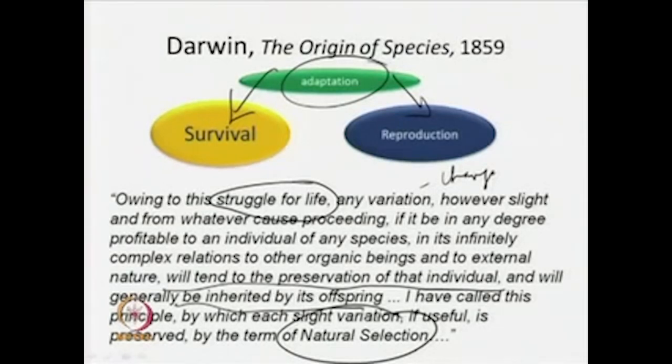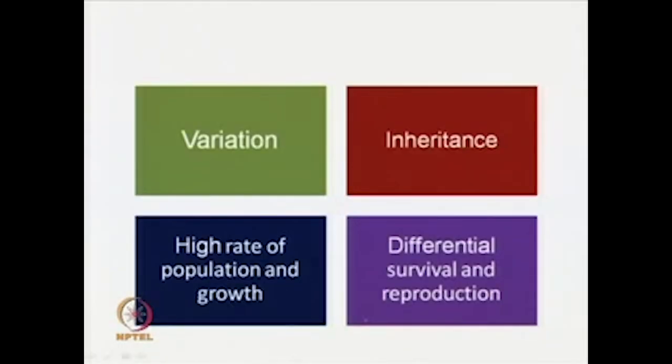The main points in Darwinian theory, which have a lot of consequences even for culture, are: variation, inheritance, high rate of population growth where there is a struggle for survival, and importantly, differential survival and reproduction. This may sound as one of the most important theoretical formulations and findings that could have been given by any scientist. It is not exactly survival per se that we are talking about, but differential survival — there has to be a difference among a group in the struggle for life.